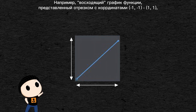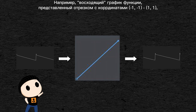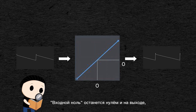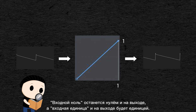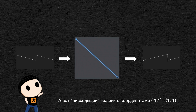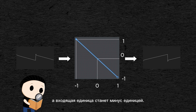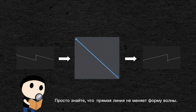For example, a graph that ramps up from minus 1 to 1 will leave the waveform unchanged: an input of minus 1 will output a value of minus 1, an input of 0 will output 0, and an input of 1 will output a value of 1. A graph that ramps down from 1 to minus 1 will invert the phase of the waveform. The graph being a straight line, it won't change the shape of the waveform though.